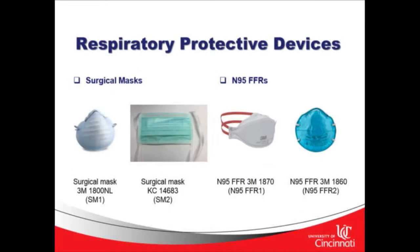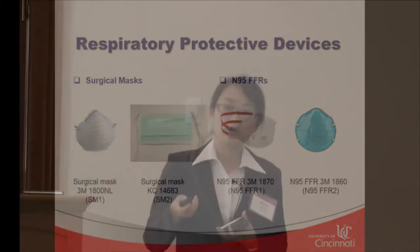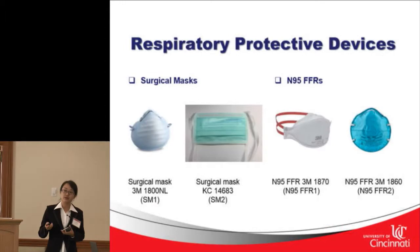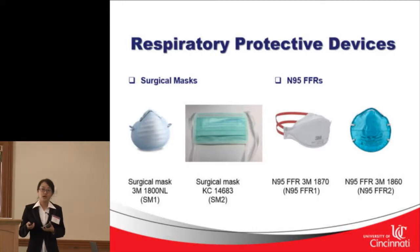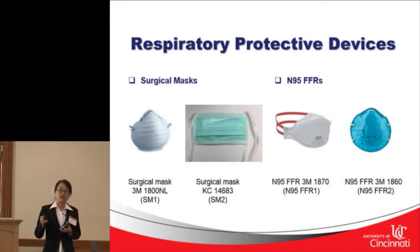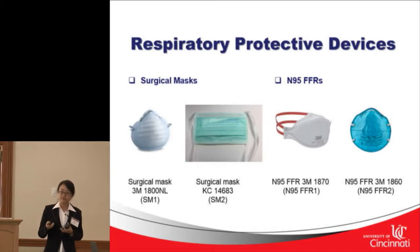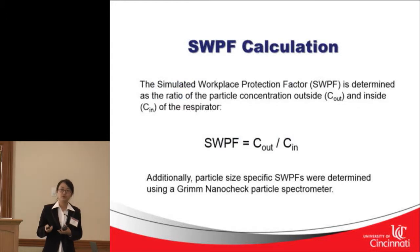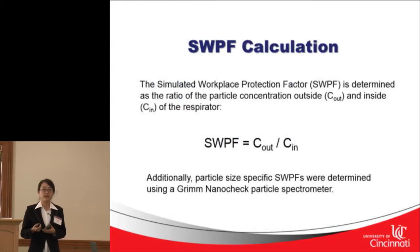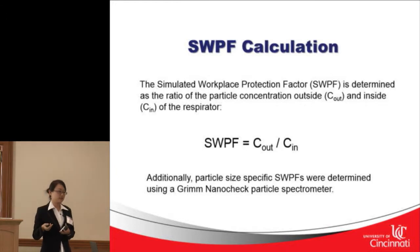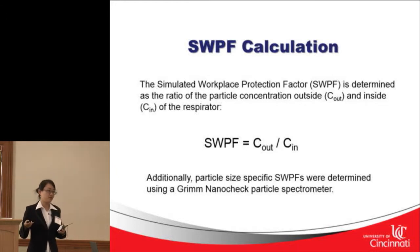In total, four respiratory protective devices were used: two surgical masks and two N95 FFRs, labeled as Surgical Mask 1, Surgical Mask 2, N95 FFR 1, and N95 FFR 2. All of these are commonly used in the operating room.